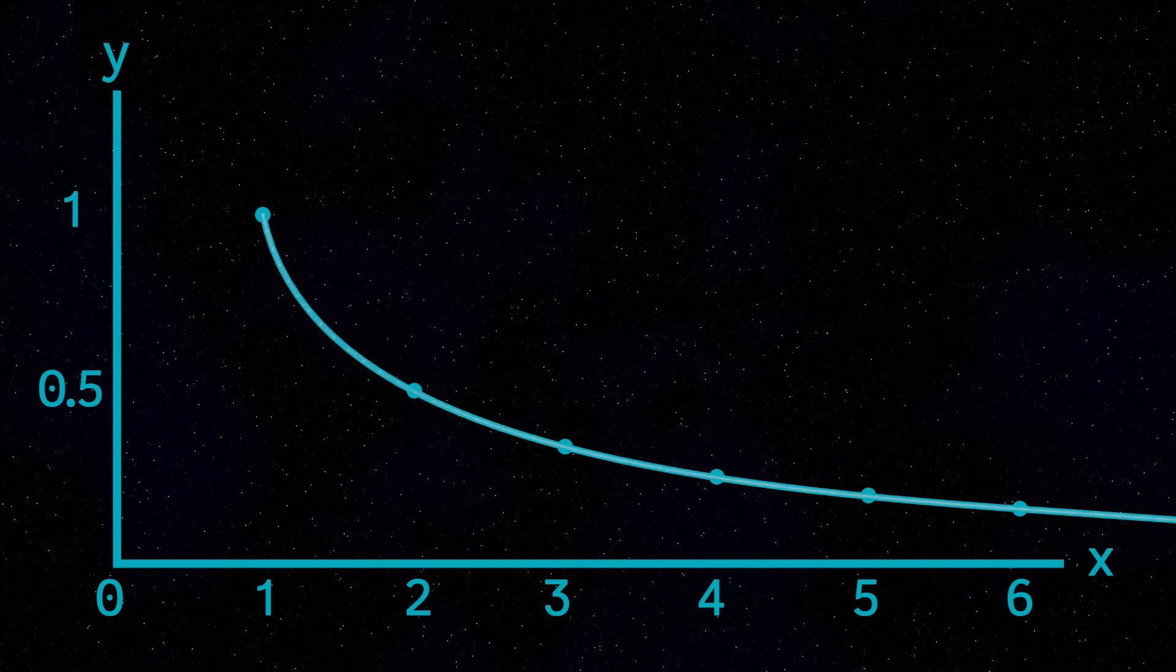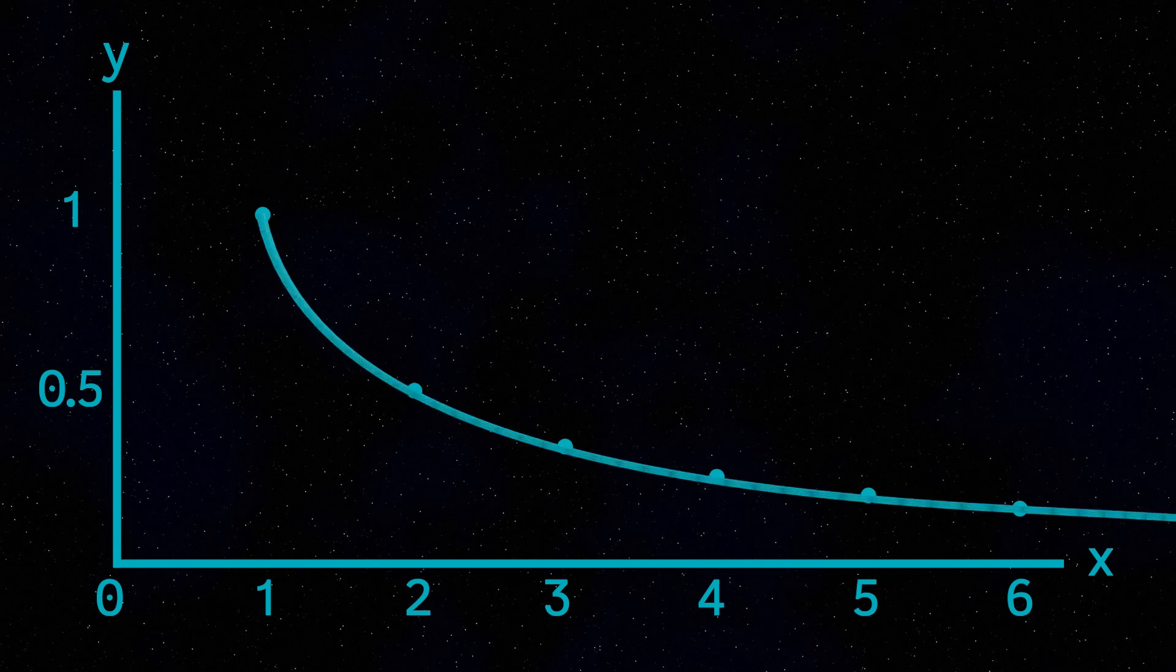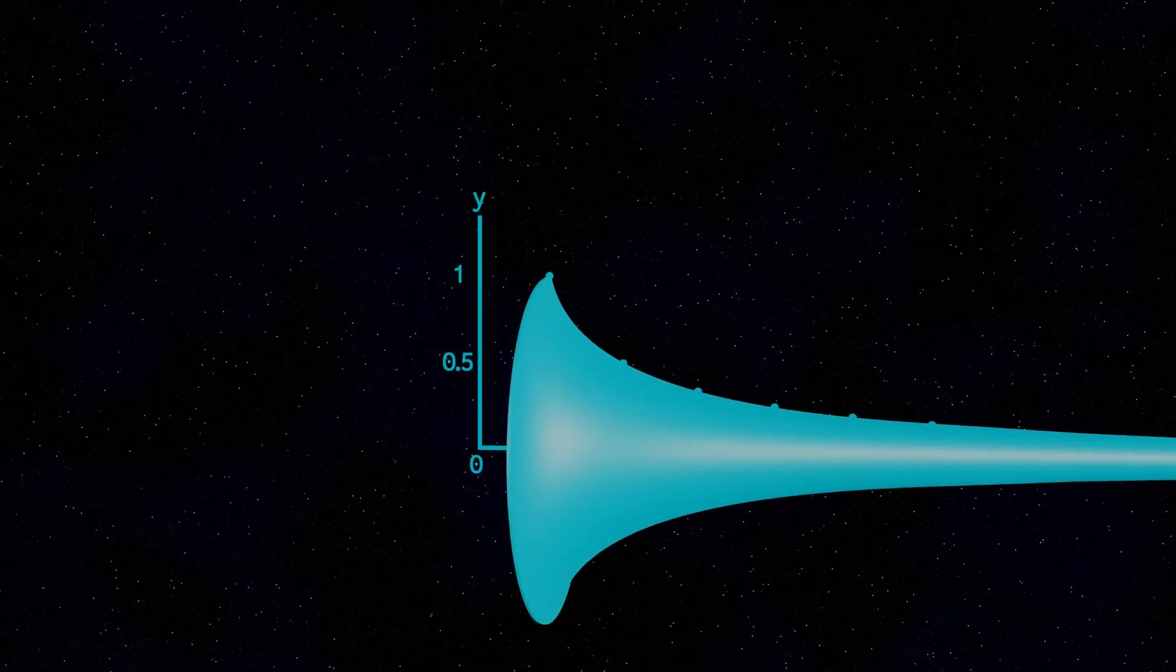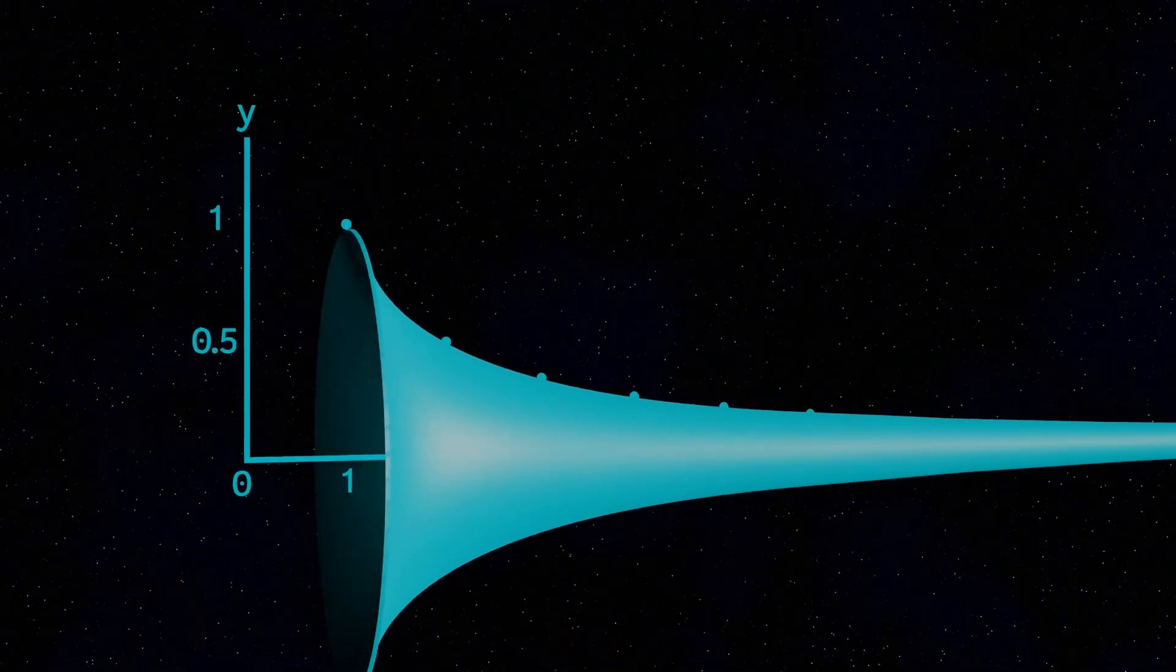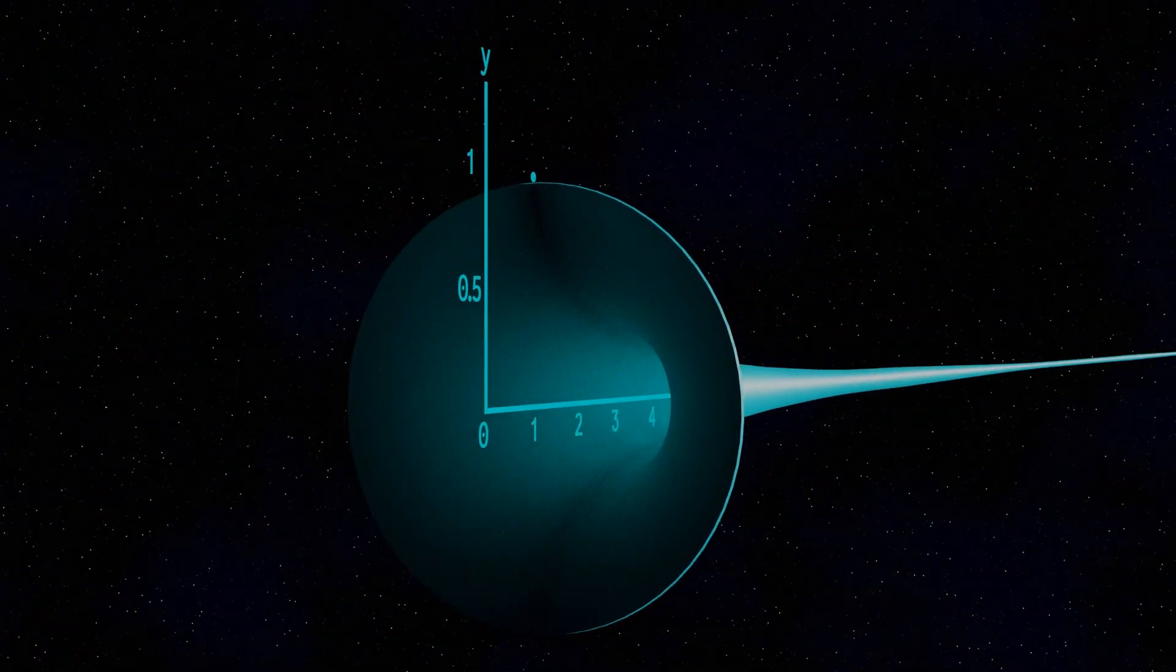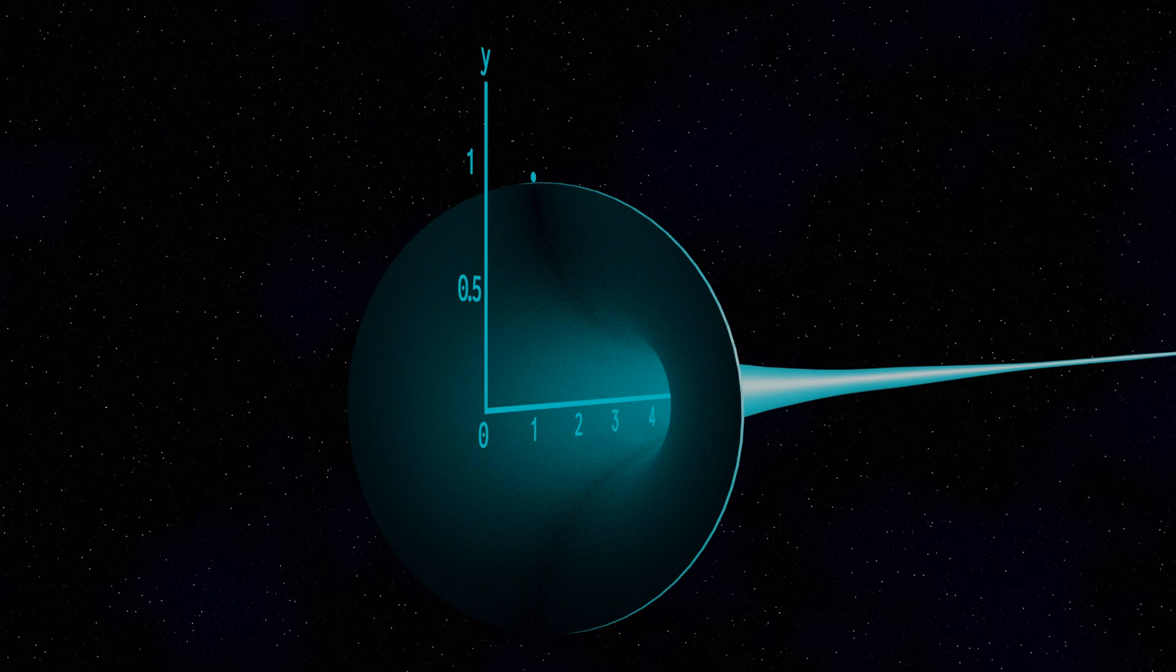If I now take this line that we've drawn and rotate it around the x-axis, it produces a three-dimensional shape. And if I plotted the line for values of x up to infinity, this tail here will be infinitely long. The shape here is given the name of Gabriel's horn, after the horn used by the archangel of the same name.